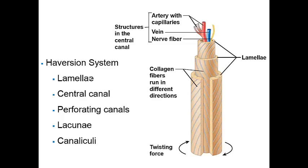You've seen compact bone under a microscope and know it has a very organized structure. The structural unit of compact bone is referred to as the osteon, also called the Haversian system. Each osteon has a cylinder-oriented pattern that runs parallel to the long axis of the bone.